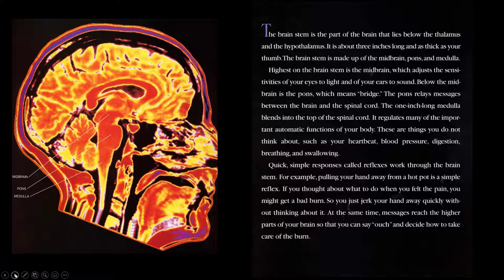Quick, simple responses called reflexes work through the brain stem. For example, pulling your hand away from a hot pot is a simple reflex. If you thought about what to do when you felt the pain, you might get a bad burn. So you just jerk your hand away quickly without thinking about it. At the same time, messages reach the higher parts of your brain so that you can say ouch and decide how to take care of the burn.